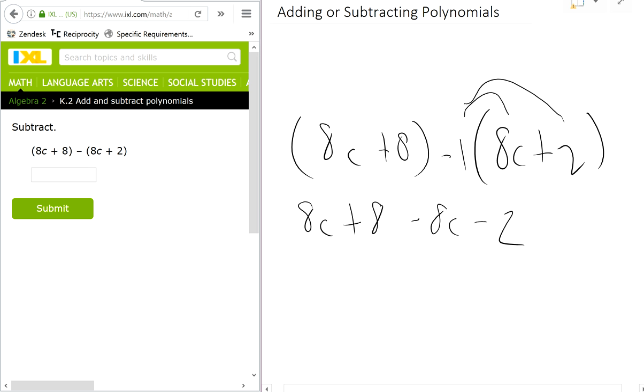Then you start combining like terms. These two are like terms, so I'm going to combine them. They cancel out: 8c minus 8c is 0c or simply 0. Then you have 8 minus 2, which is simply 6.